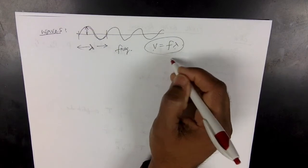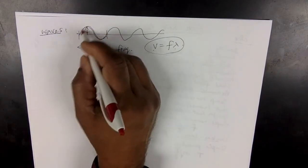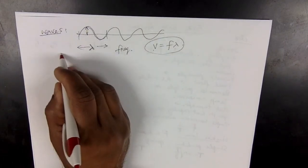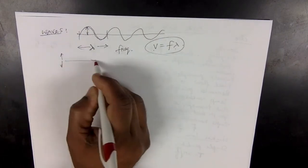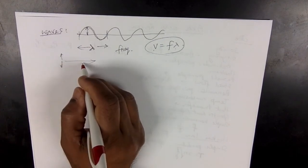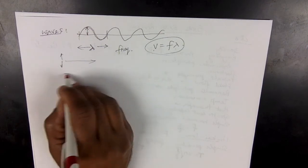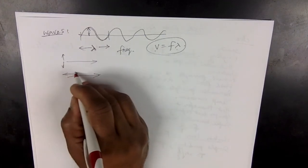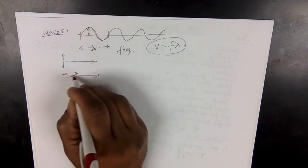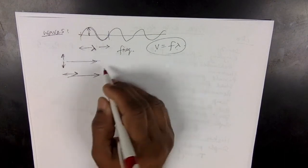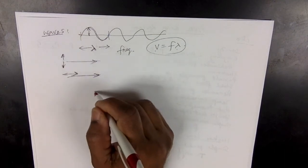Waves can be two types: transverse and longitudinal. In transverse waves, the particles move up and down while the energy goes forward — you can see those things on page 380. Longitudinal waves are when particles oscillate left and right while the energy goes forward — the particles move parallel to the direction of energy. In transverse waves, the particles move perpendicular to the energy travel. See page 381.